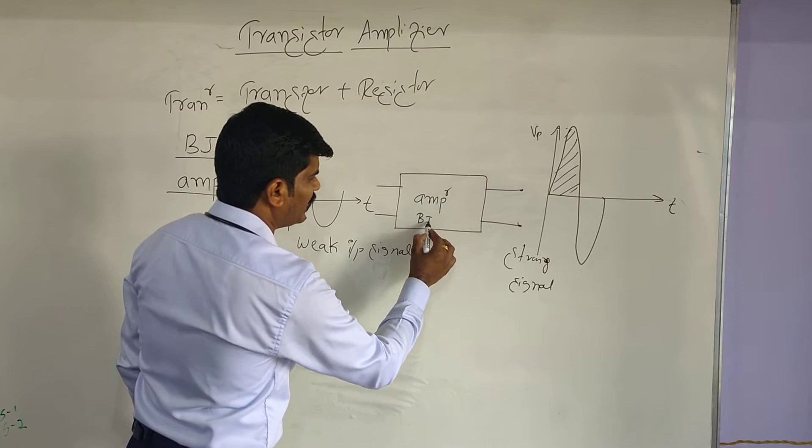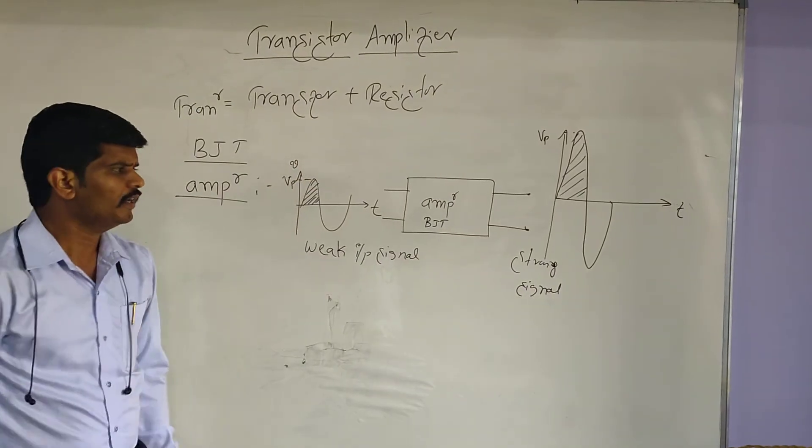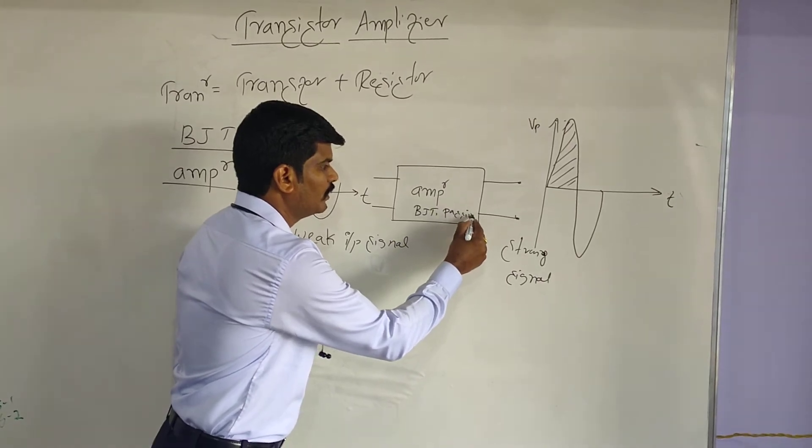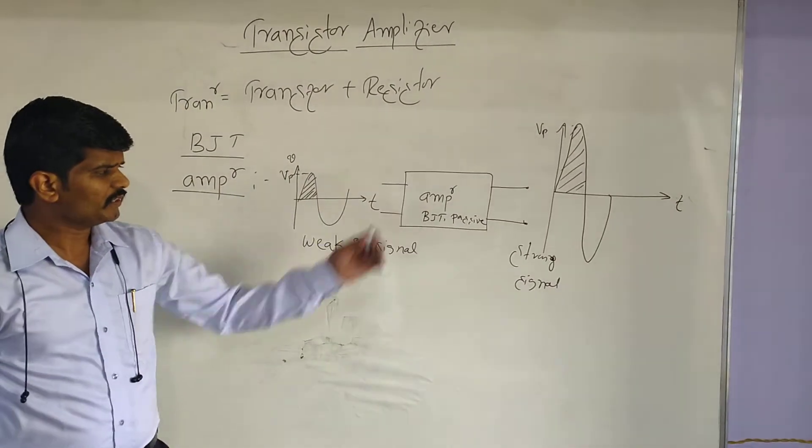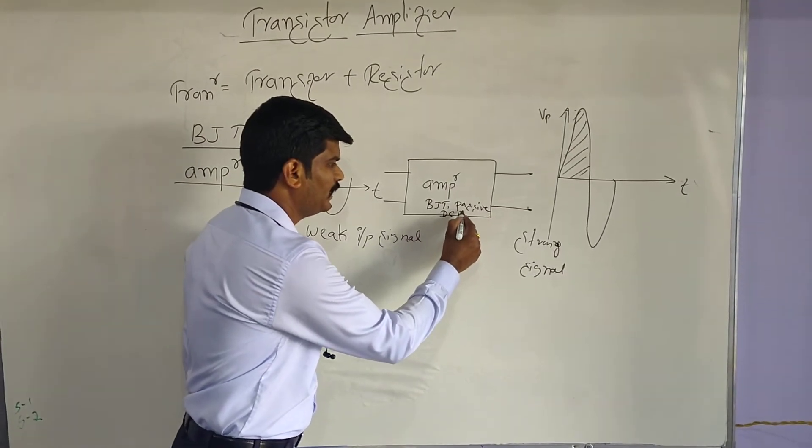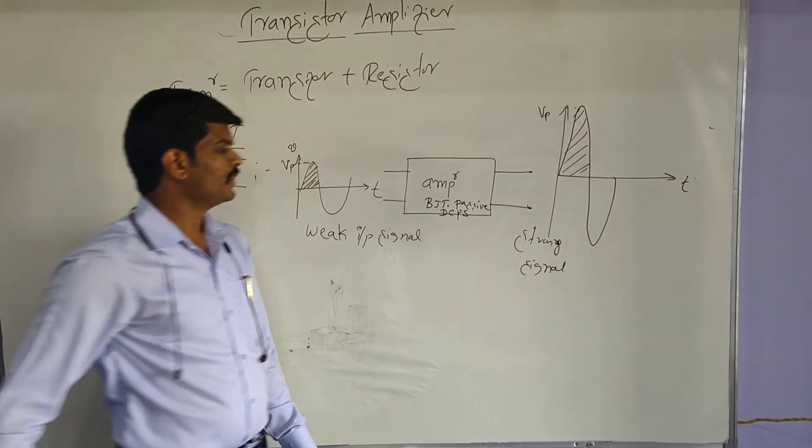Then, which is the prime element in the amplifier? BJT. And then passive components, nothing but resistor, capacitor, such kind of elements. And DC power supply. DC power supply.